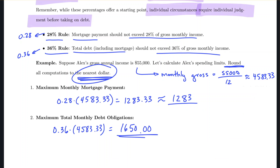What this means in terms of total monthly debt obligations is that including the mortgage and any other debt — credit card, car, medical bills, student loans — all of it, following the 36% rule, should not exceed $1,650 per month for a person with this average annual income.